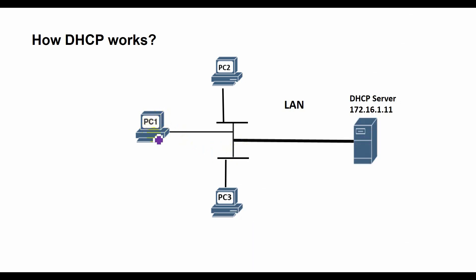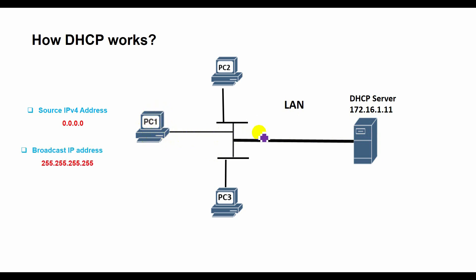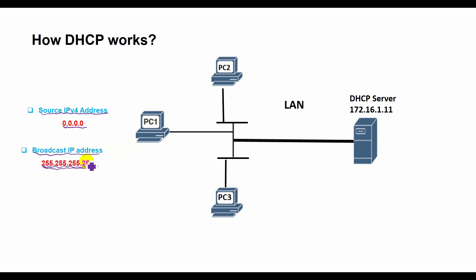Let me show you a clear example between a computer and a DHCP server on the same LAN. When you connect the computer, it does not have an IP address yet, but it needs to send IP packets to find one. Two special IPv4 addresses allow a host to send and receive messages on the local subnet: 0.0.0.0, an address reserved as a source IPv4 address for hosts that do not yet have an IP address, and 255.255.255.255, the local broadcast IP address. All broadcast packets are sent to this destination address on the local data link.